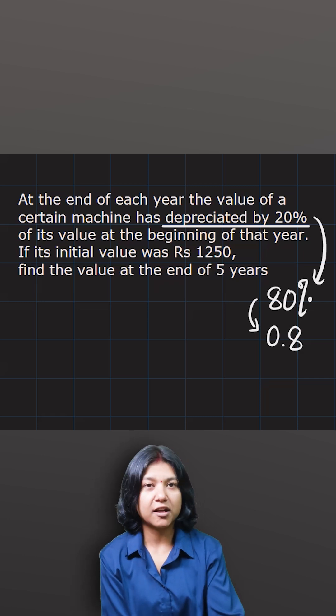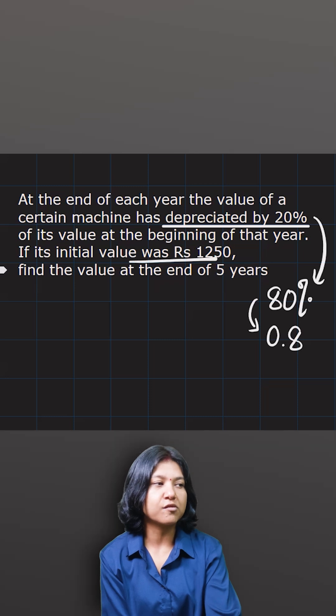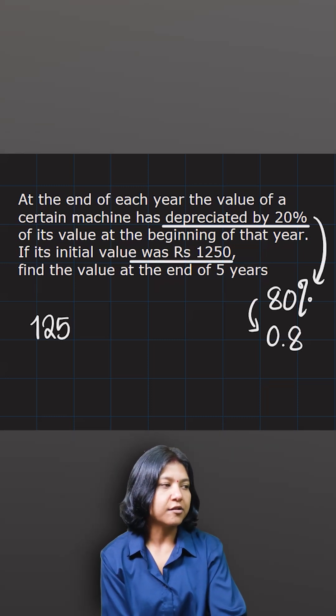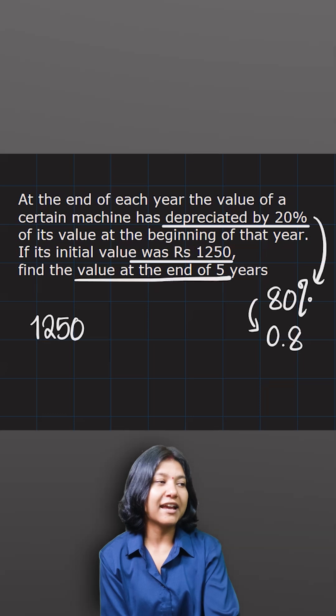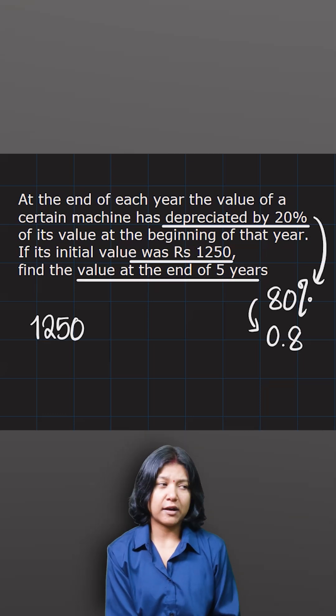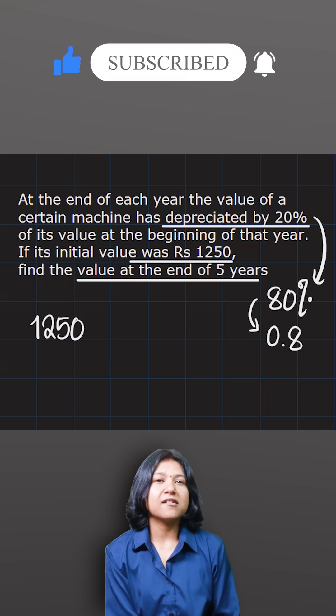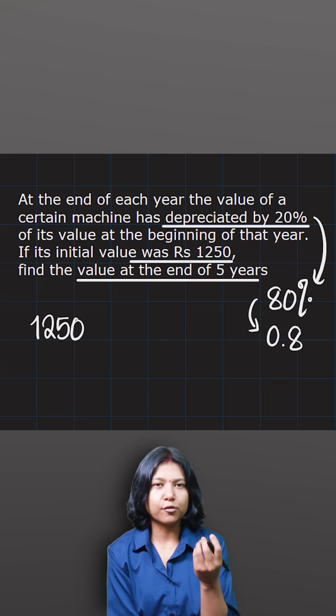So they have given you one important thing, that's the initial value, which is 1250. So 1250 happens to be the initial value. Now they want you to find the value at the end of five years. It's very important to note one thing: 1250 represents the initial value as in the value in your zero year.